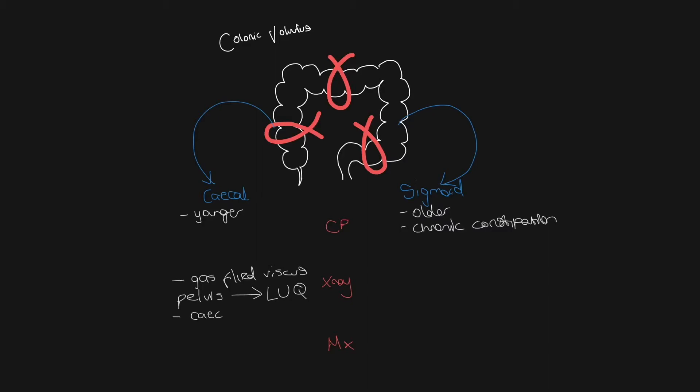Another differentiating factor is that the dilated cecum tends to keep the haustra, whereas the dilated sigmoid will be a-haustral.